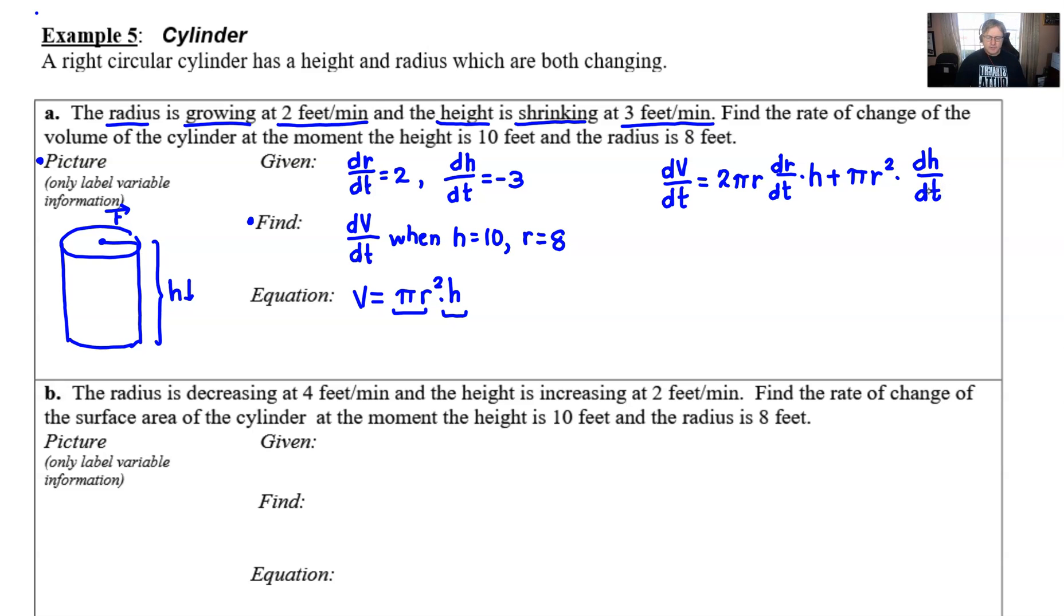By the time you get here, it's really now a matter of just throwing all the information in that you've got and coming up with your result. We're looking for the rate of change of volume. We know we're doing so when the radius is 8, the rate of change of the radius is positive 2, and we're dealing with this when the height is 10.